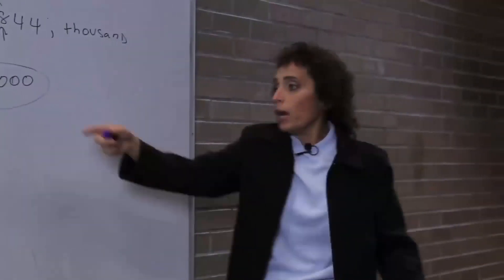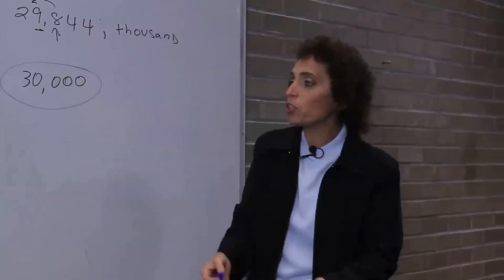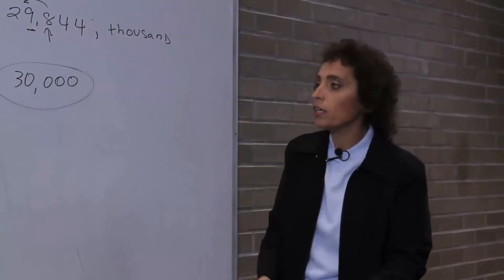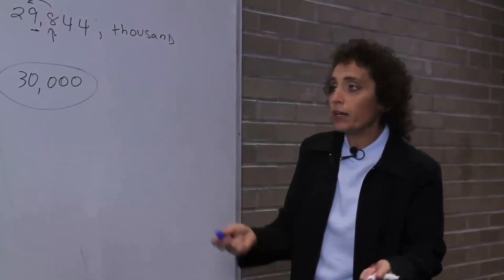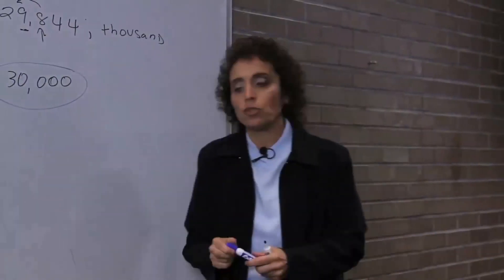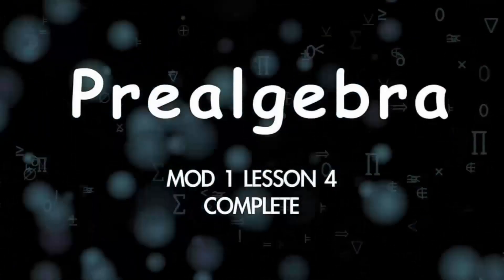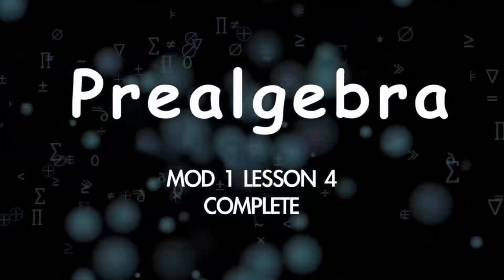So that's how you round. And being able to round will allow us to do a lot of problems very quickly. And that's it for rounding and estimating. The next thing we do is multiplication of whole numbers.